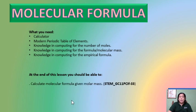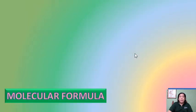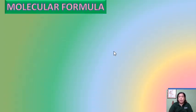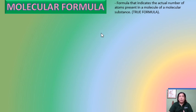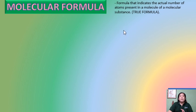At the end of this lesson, you should be able to calculate molecular formula given the molar mass. First, let us define what molecular formula is. Molecular formula is the formula that indicates the actual number of atoms present in a molecule of a molecular substance. It is also called the true formula because it shows the actual number of atoms present — unlike the empirical formula, which only shows the simplest whole number ratio of each constituent element. In molecular formula, the subscripts are larger because it shows the actual number of atoms.